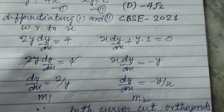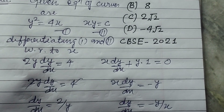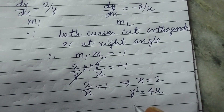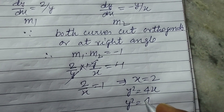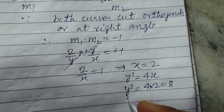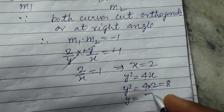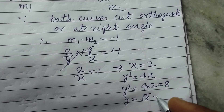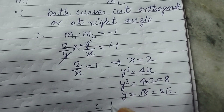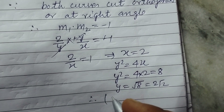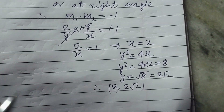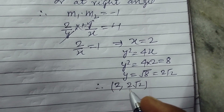When x = 2, we substitute this value into the first curve: y² = 4·2 = 8, so y = 2√2. Therefore the point of intersection is (2, 2√2).